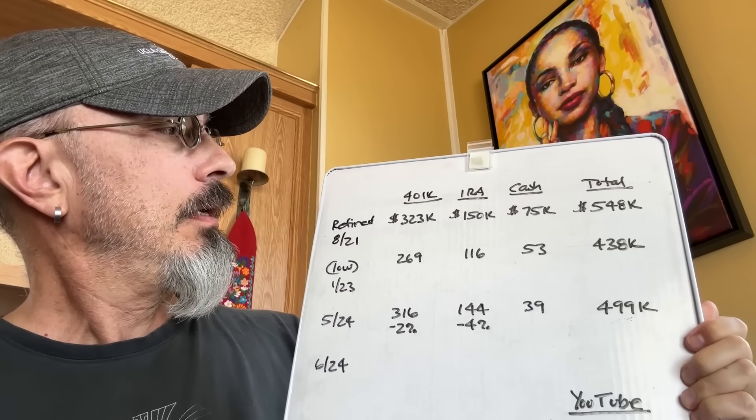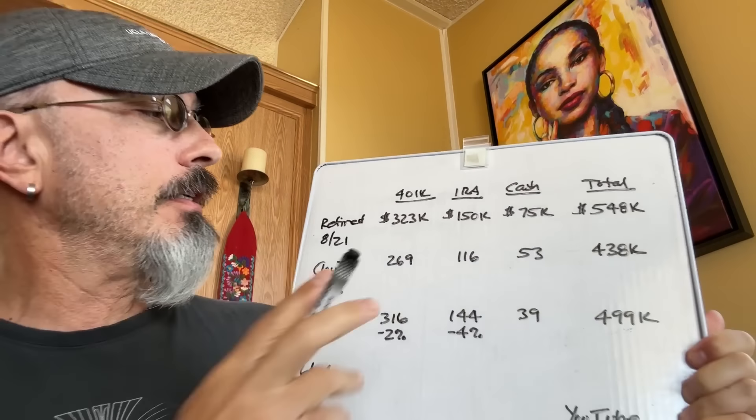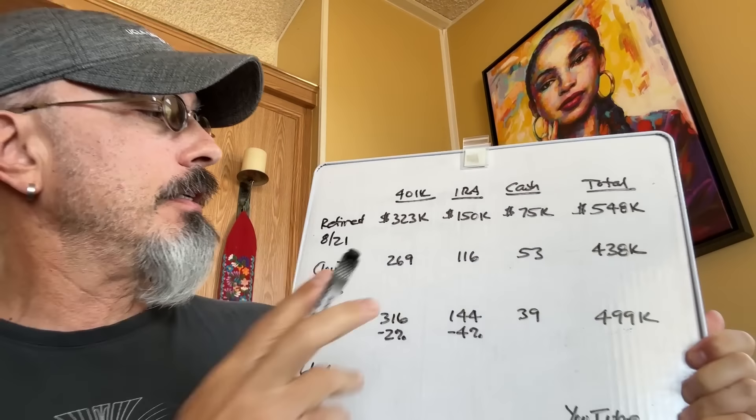So when I retired back in August of 2021, I was at $323,000 on this 401k, $150,000, $75,000 for a total of $548,000 in my nest egg.